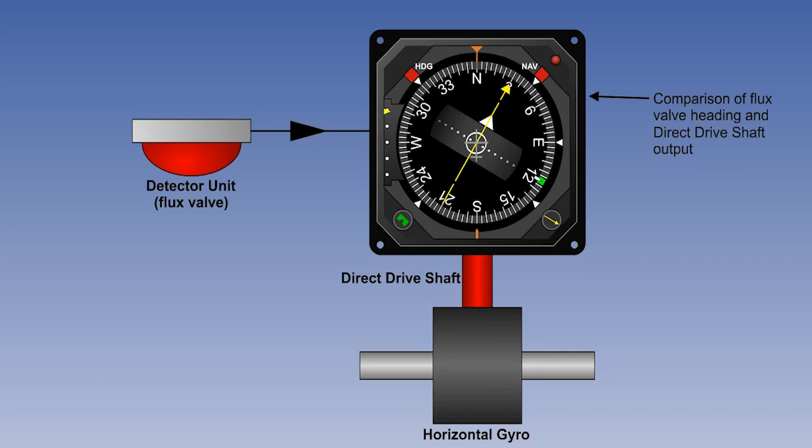In the compass indicator box, the flux valve output is compared with the position of the gyro drive shaft. This is the shaft which positions the compass card indicator, that is, the heading shown to the pilot. If the two are aligned, no further action takes place. The compass card is reading the right heading.